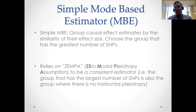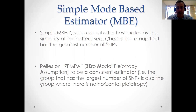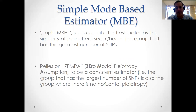So imagine that we've got lots of SNPs and each one provides us an estimate of the causal effect of the exposure on the outcome. The idea behind the simple mode-based estimator is that we group the causal effect estimates by the similarity of their effect size and then simply choose the group that has the greatest number of SNPs.